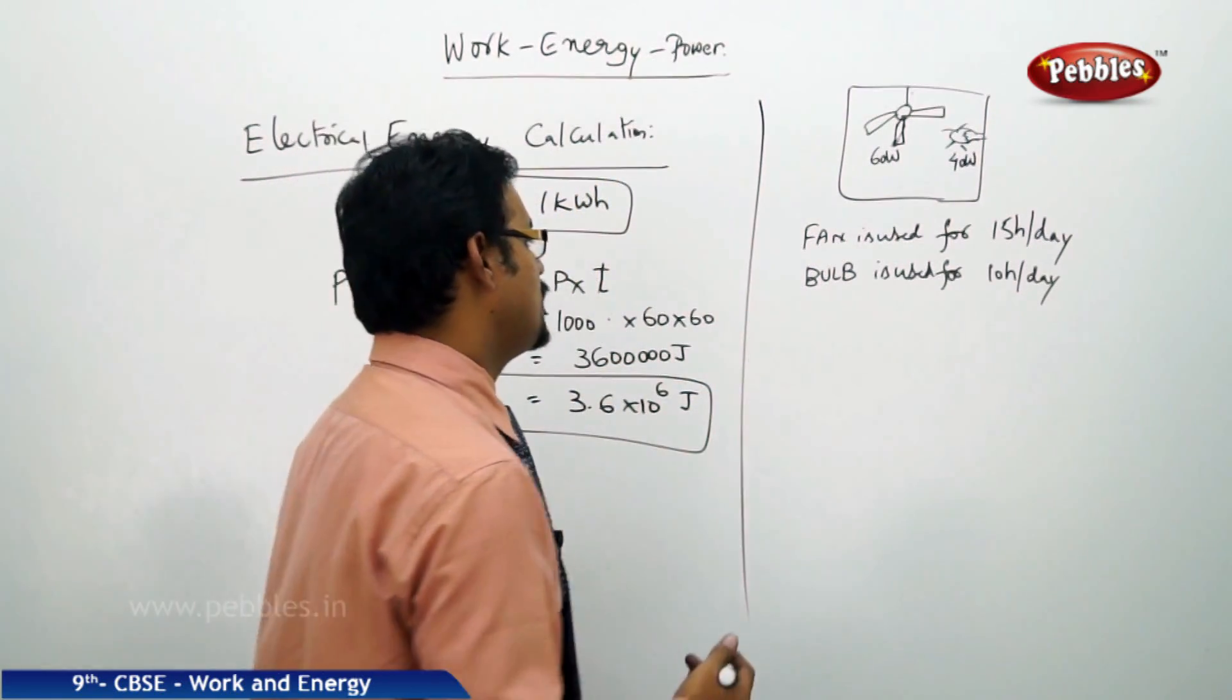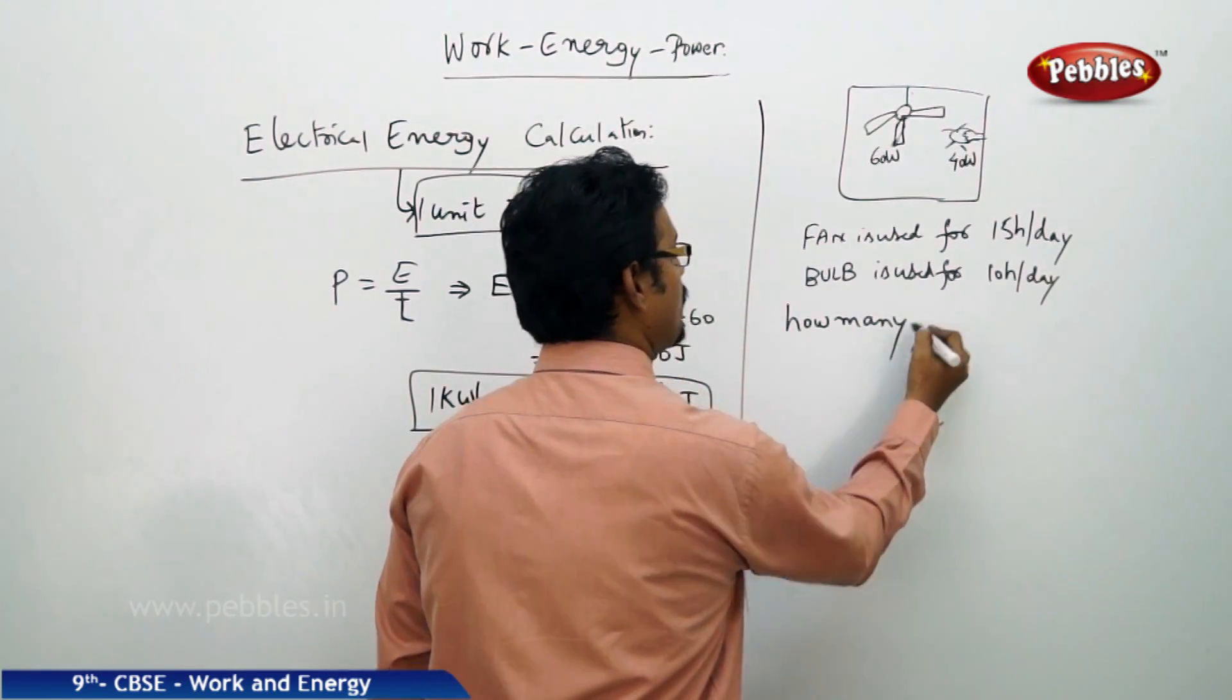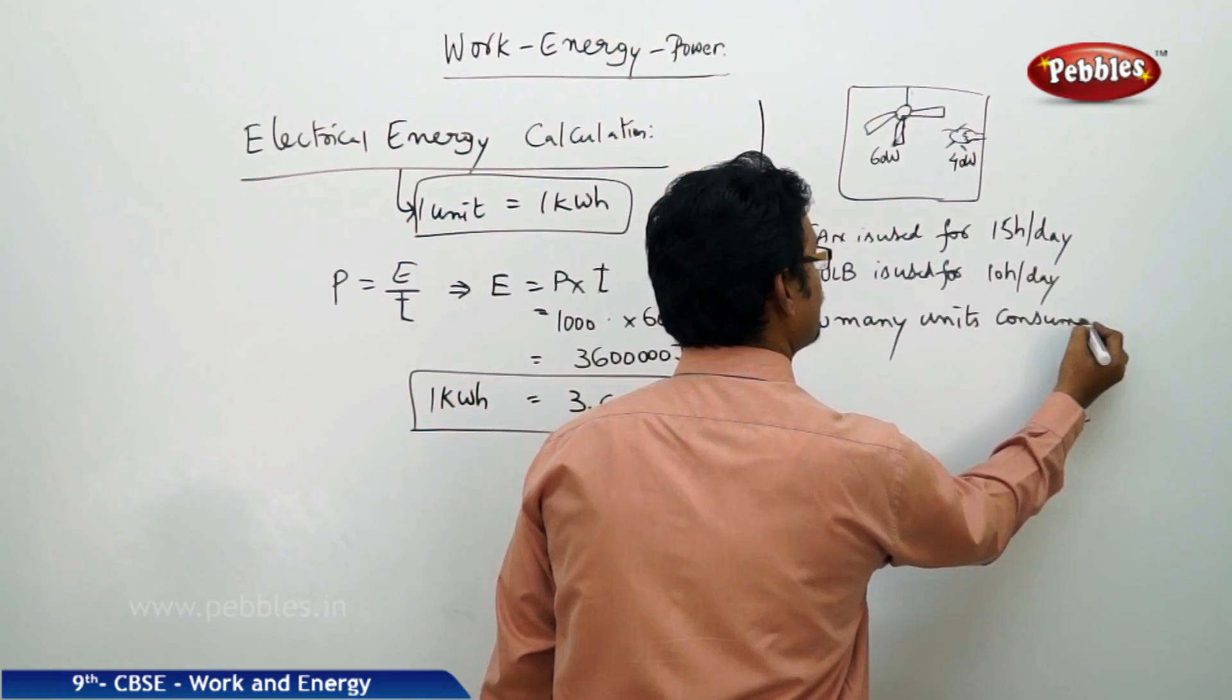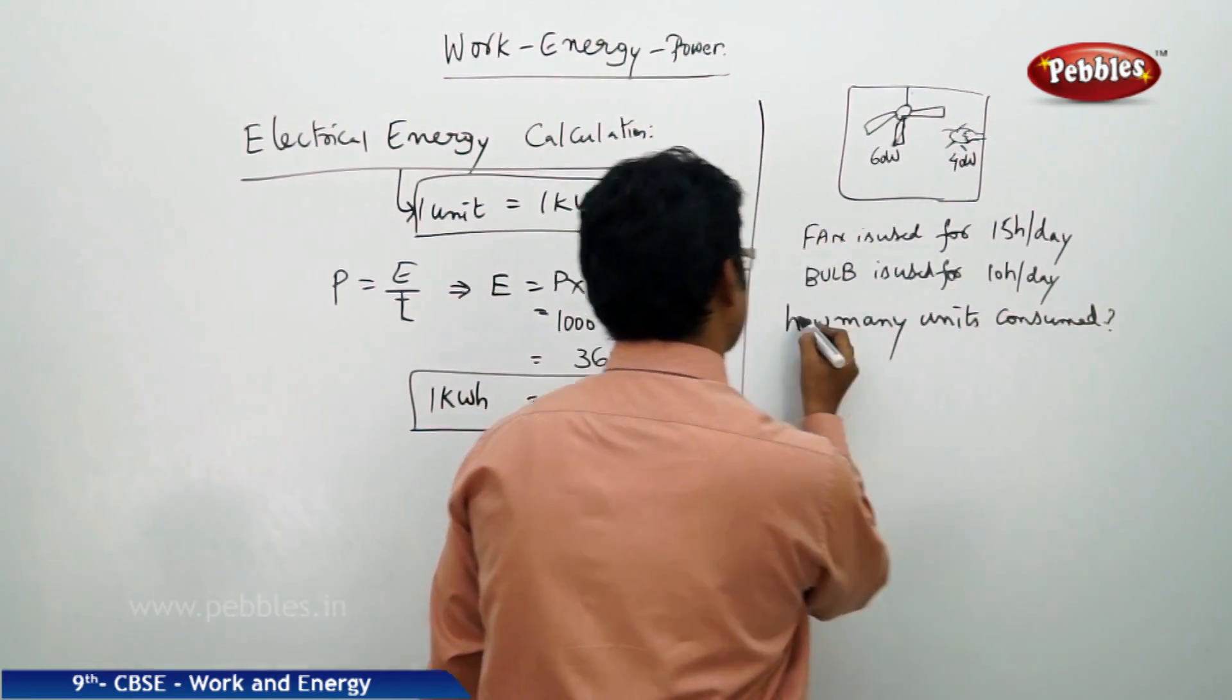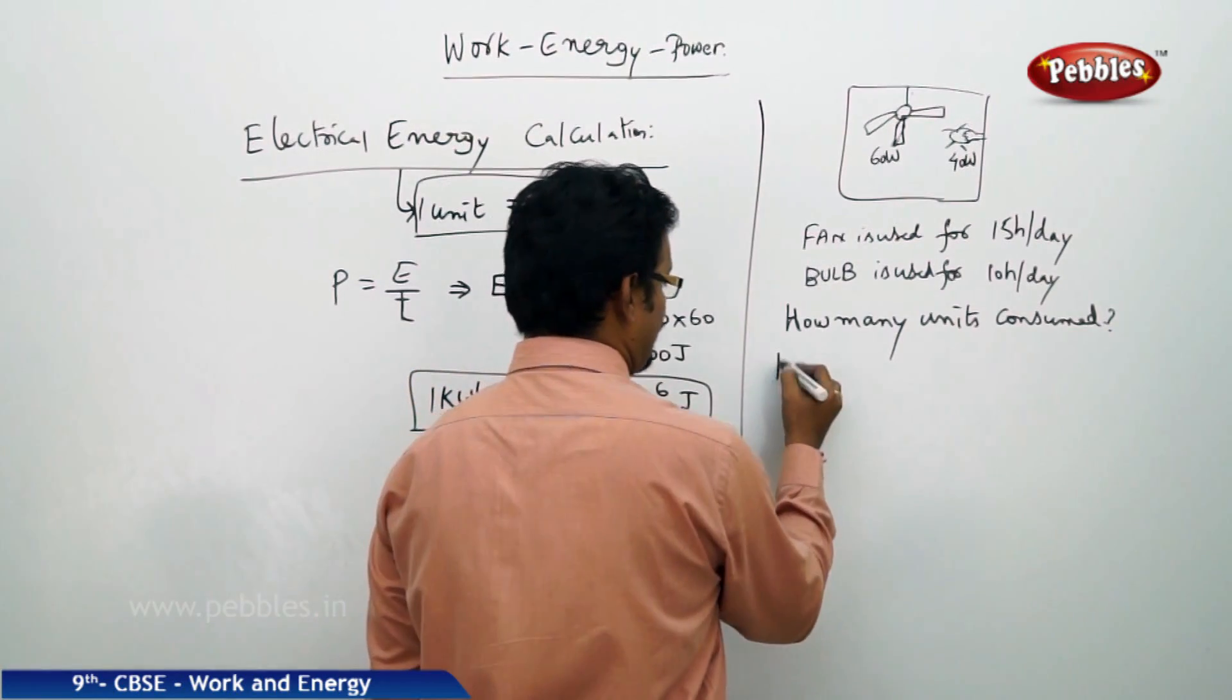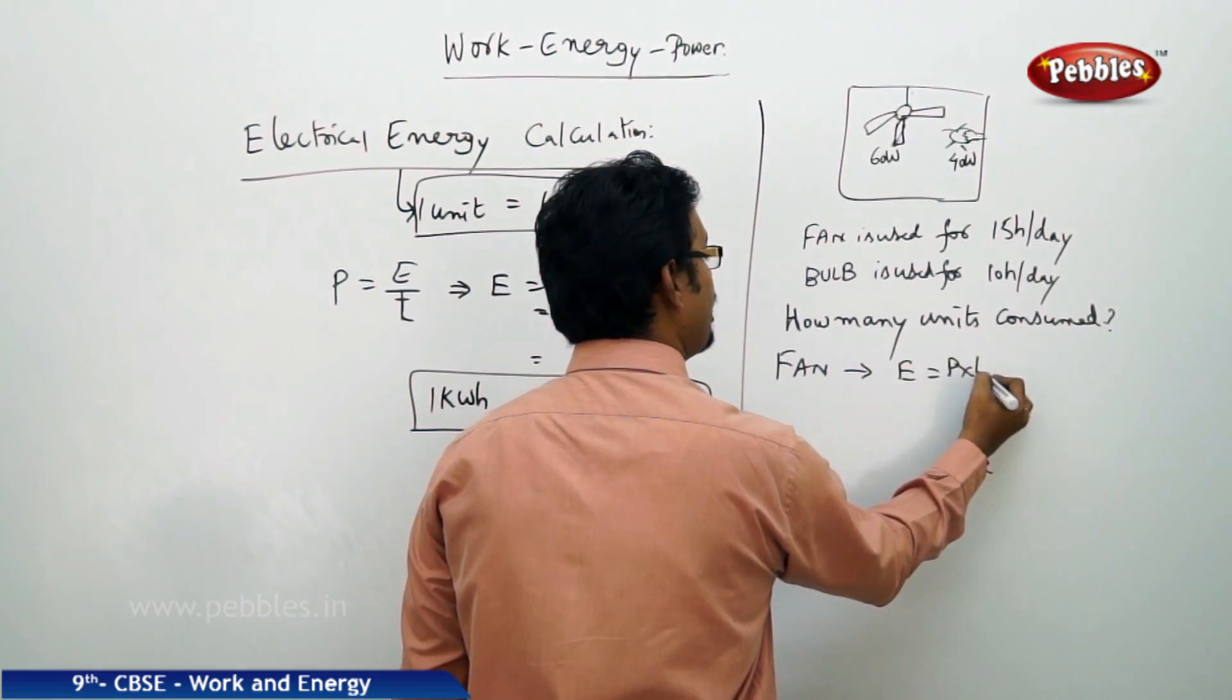Now the question is how many units consumed? How many units consumed? Let me calculate. So for the fan, energy equal to power into time, and power of a fan is 60 watts into time.